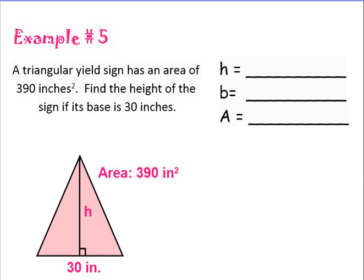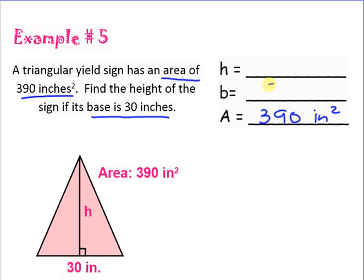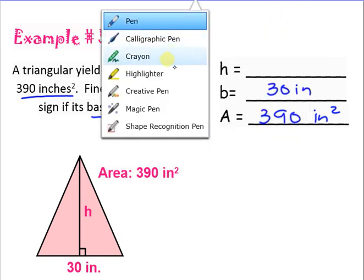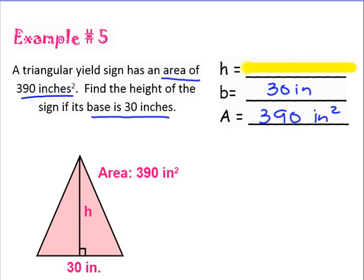Now we're going to move on to finding the missing dimension. What happens when I give you the area but you're missing the height? A triangular yield sign has an area of 390 inches squared. Find the height of the sign if the base is 30 inches. We know the area is 390 inches squared and the base is 30 inches — we're trying to find the height. We start with the formula: area equals base times height times 0.5.